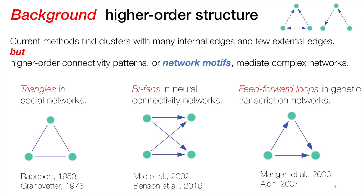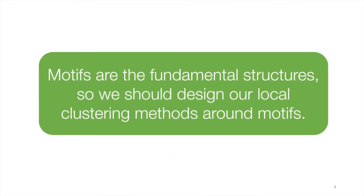But we really shouldn't be worrying about edges. There's a lot of evidence that higher order connectivity patterns or network motifs are really what drive complex networks. To give you an example, triangles show up all the time in social networks — if I have two friends, they're likely to meet each other and become friends themselves. Different patterns show up in different domains. So if motifs are the fundamental structure of networks, we should really be designing our local clustering methods around motifs.